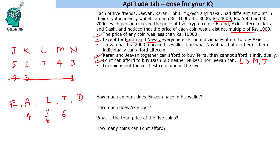Lohit can afford Dash but Mukesh — who has 4000 — cannot, so Dash must be more than 4000. Since J cannot buy Dash either, Dash is more than 5000. Dash will therefore be 7000. If Dash is 7000, Litecoin would be 8000, and since Litecoin is not the costliest, coin E will be 9000. These are the prices of the coins in thousands.